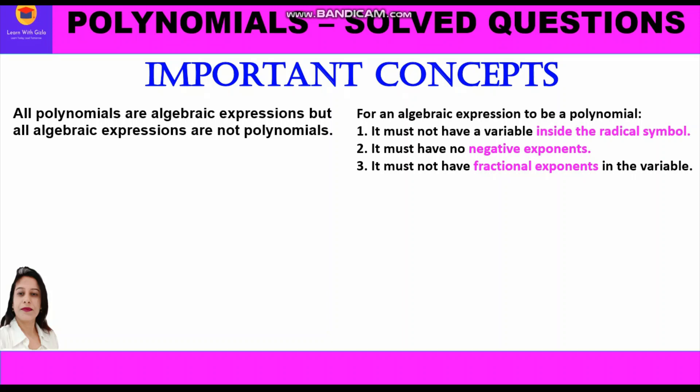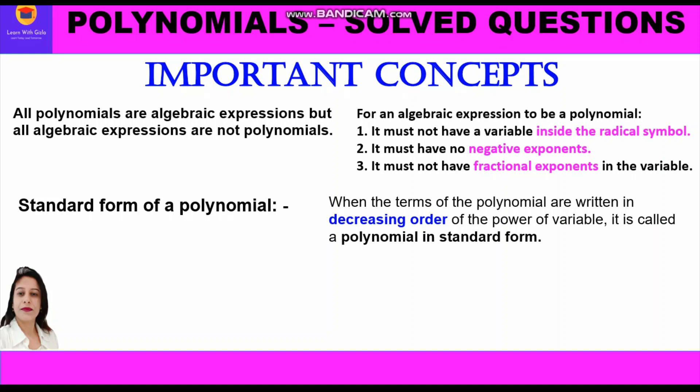To summarize the three conditions: the variable should not be in a radical symbol, meaning it should not be in root form; it should not be raised to any negative power; and it should not be raised to any fractional or rational number power.